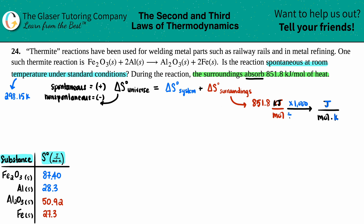So we need to do two things: multiply by 1000 to get joules on top — the moles are already on the bottom — and divide by 298.15 to add kelvin in the denominator. So delta S for the surroundings equals 851.8 × 1000 ÷ 298.15, which gives us 2856.951 joules per mole·kelvin. That is our delta S for the surroundings.